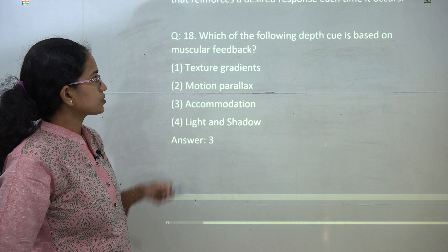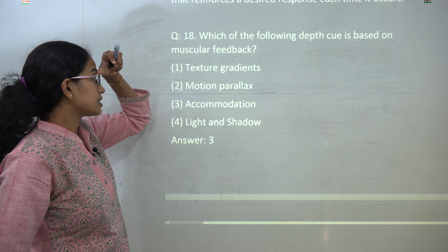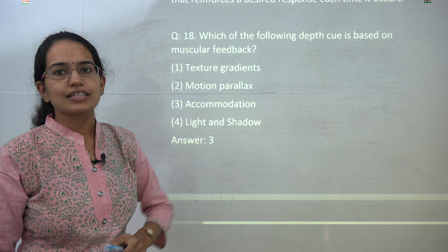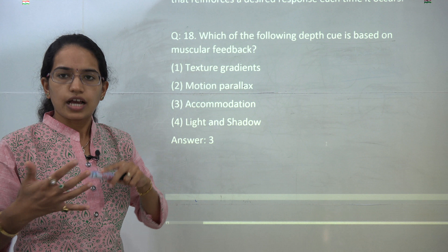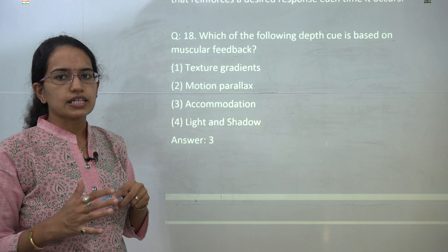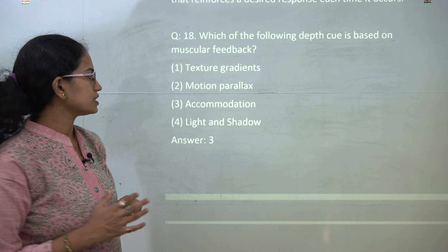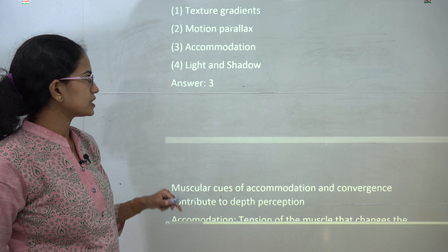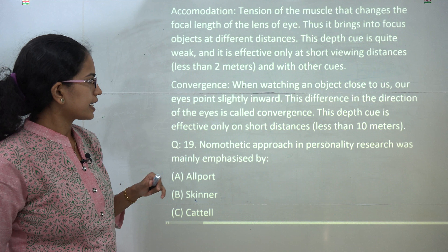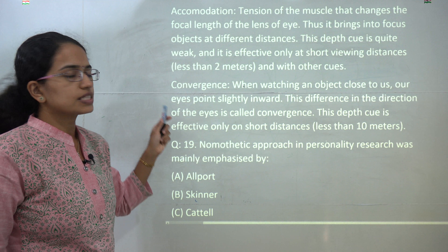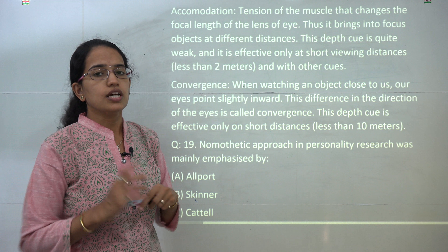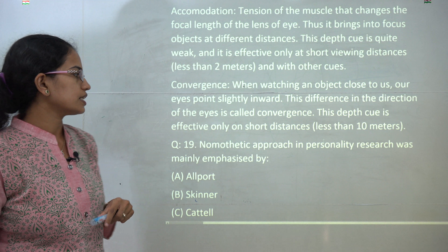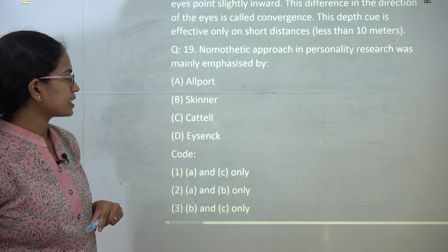The next question: the depth cue is based on two muscular feedbacks — one is accommodation and the other is convergence. Since accommodation is the listed choice, accommodation is the correct answer. There were many questions on perception, which will be discussed in detail in the upcoming lectures.